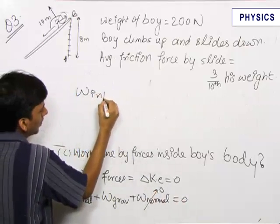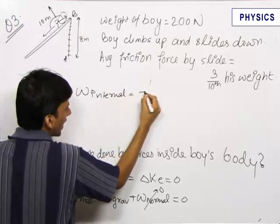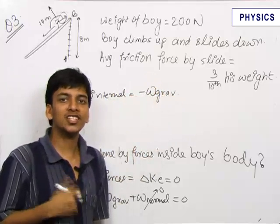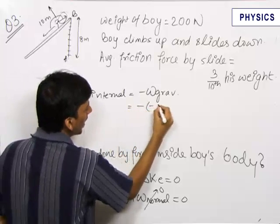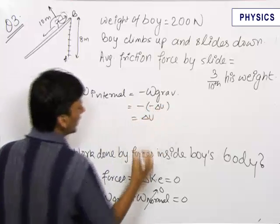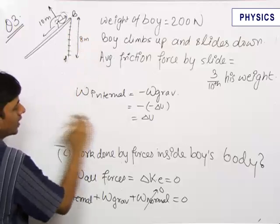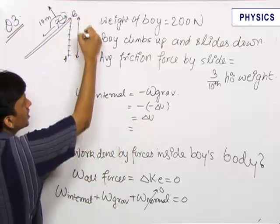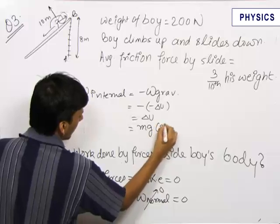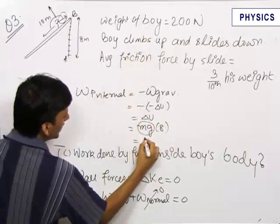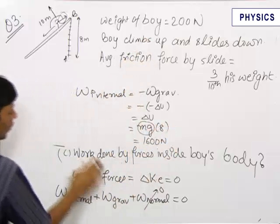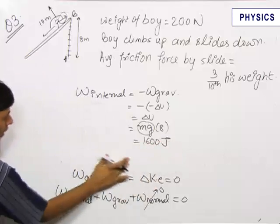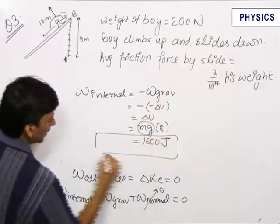Therefore, work done by internal forces equals the negative of work done by gravity. We know that work done by conservative forces equals the negative of change in potential energy, so this becomes equal to ΔU. Therefore, work done by internal forces equals the change in potential energy as the man goes from A to B, which equals mg × 8. Since mg = 200 Newtons, the answer is 1600 Joules. The work done by internal forces as the man comes down is zero.